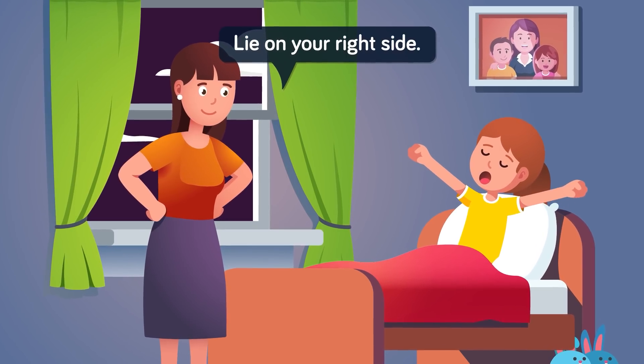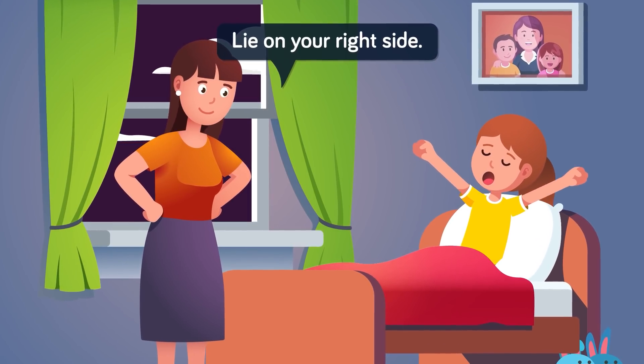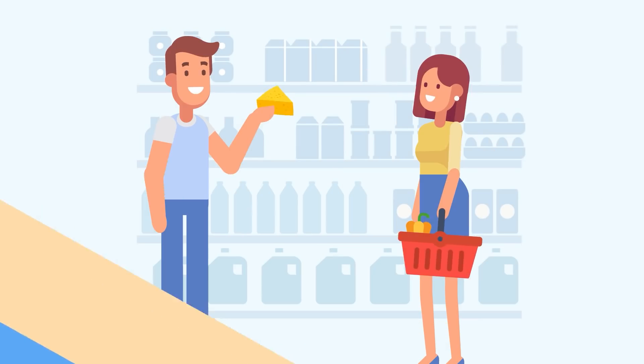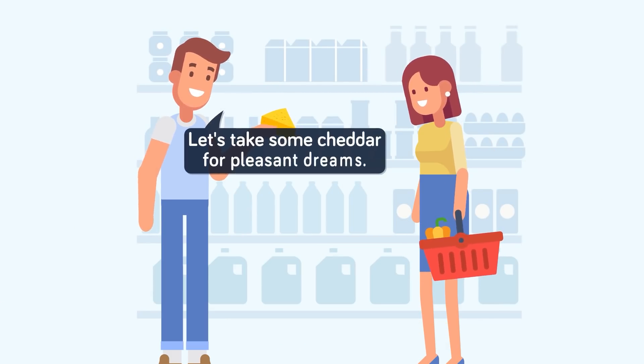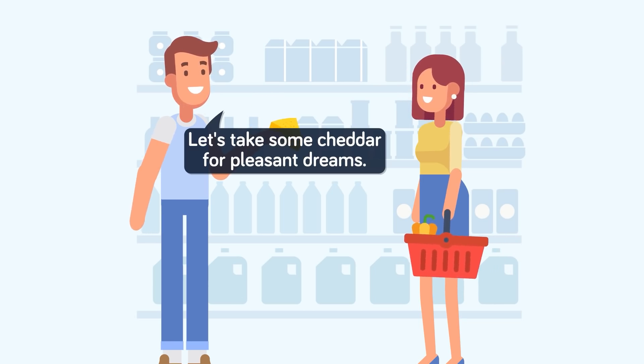How you sleep can have an impact, with sleeping on your right side being most likely to create pleasant dreams. Eating cheese before bed has actually been shown to influence dreams, with cheddar encouraging pleasant dreams, while blue cheese can create more intense ones.